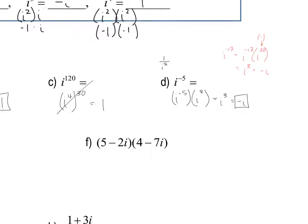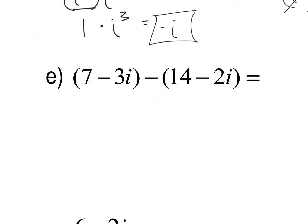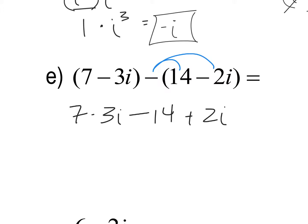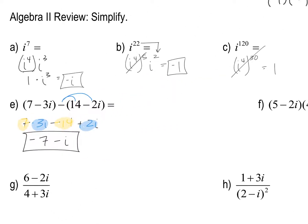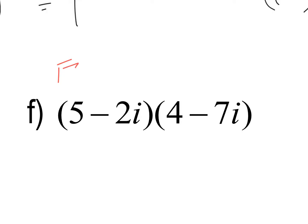Treat i's like x's when combining like terms. For example, subtracting (7 − 3i) − (14 − 2i): distribute the minus sign to get 7 − 3i − 14 + 2i. Combine like terms: 7 and negative 14 make negative 7, and negative 3i and positive 2i make negative i. The answer is negative 7 minus i, written with the i part last.